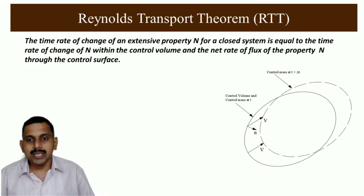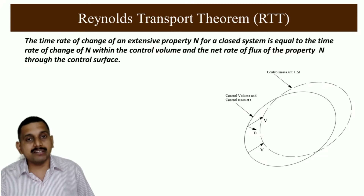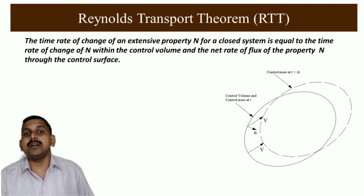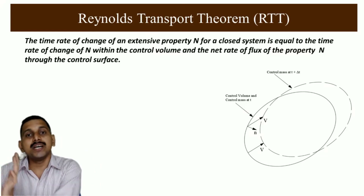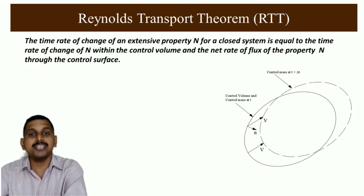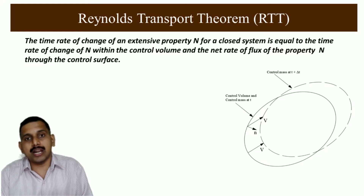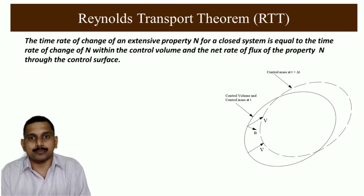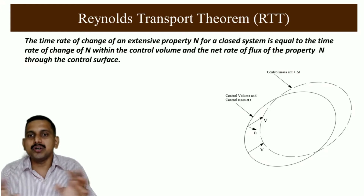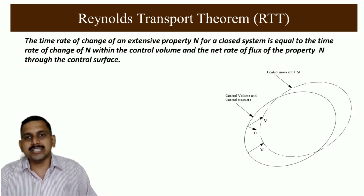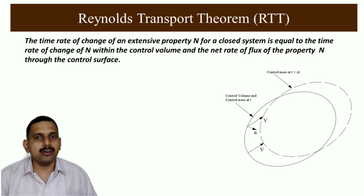Using this diagram, we can see the control volume and control mass coincide at time t. V is the velocity and n is the normal to the surface. The control mass moves after some time, but the control volume is fixed in space. As the control mass moves, the rate of change of its property equals the rate of change of that property in the control volume plus the flux all around that control volume — some mass going out and some coming in. Net flux means what is going out minus what is coming in, plus what is changing inside.